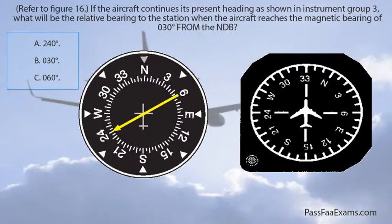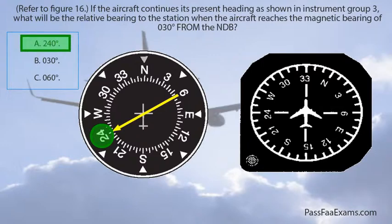All that's left to do is read the number shown on the head of the needle inside the fixed-card ADF, because the question asks for the relative bearing to the station. And the answer is 240 — that is the relative bearing to the station and our correct answer. If the question had asked for the relative bearing from the station, then we would read the tail of the needle, which gives us 060.